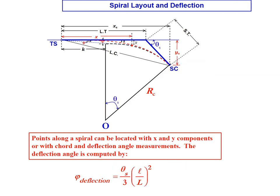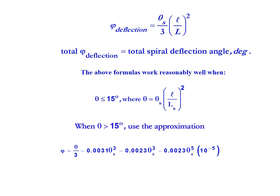As we looked with the X and Y components, you can lay out points along the spiral with those X and Y components based on chord and deflection angle measurements. And here's the equation for the deflection angles incrementally as you move along a spiral. And it's important to note that this is a formula that works reasonably well with smaller values of theta. But as theta increases, another approximation should be used for a higher level of precision.